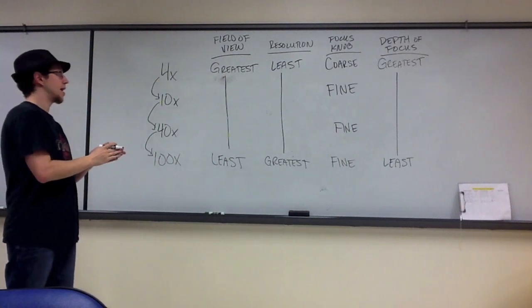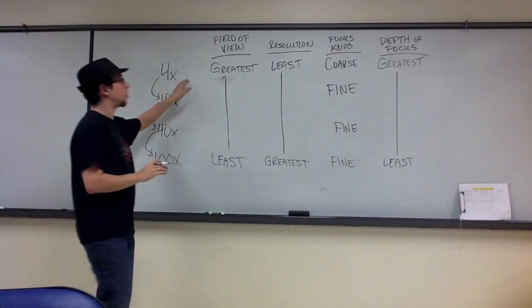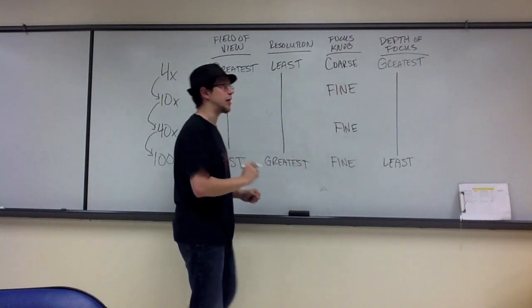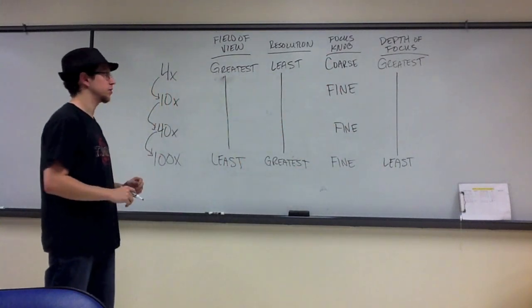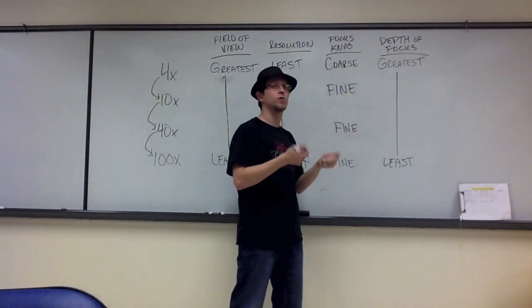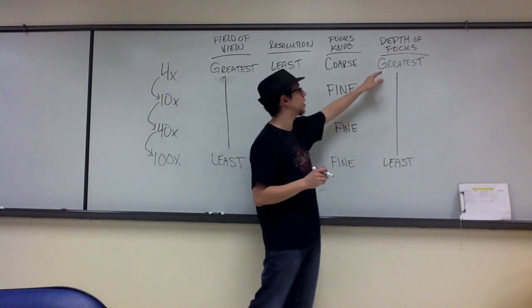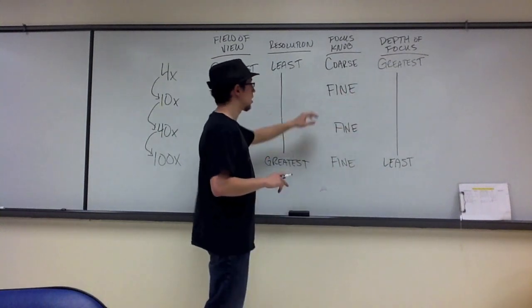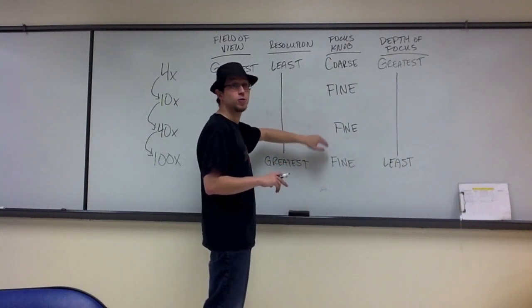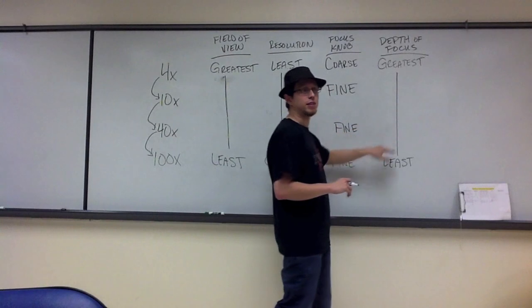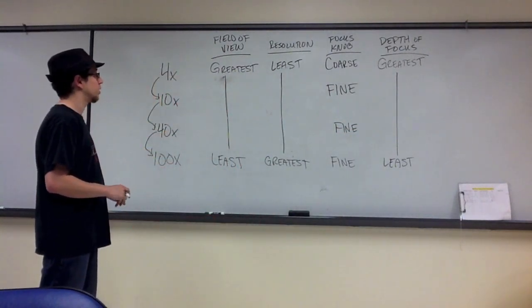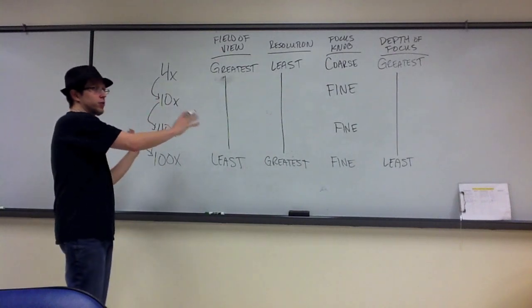How much alteration can you make to the focus knob and still keep your sample in focus? 4x provides us with the greatest amount of wiggle room. We can turn those fine focus adjustment knobs and still remain in focus for the most part on 4x. But at 10, 40, and 100, as we move from objective to objective, that amount starts to decrease. The depth of focus decreases with magnification.